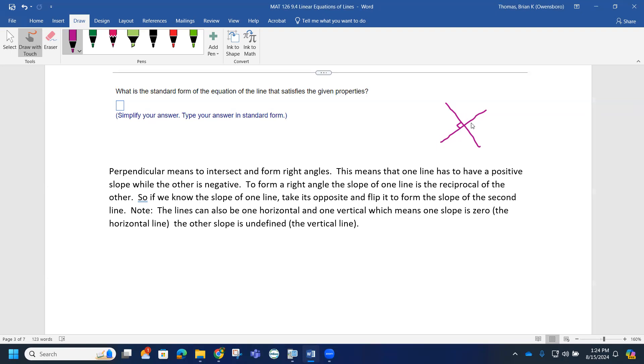But also, it's got to be negative. So we also know it's got to have a negative part of it, too. So there's two things we have to take into account. If we know that one slope of one line, we actually have to take its opposite and flip it to form the slope of the second line.